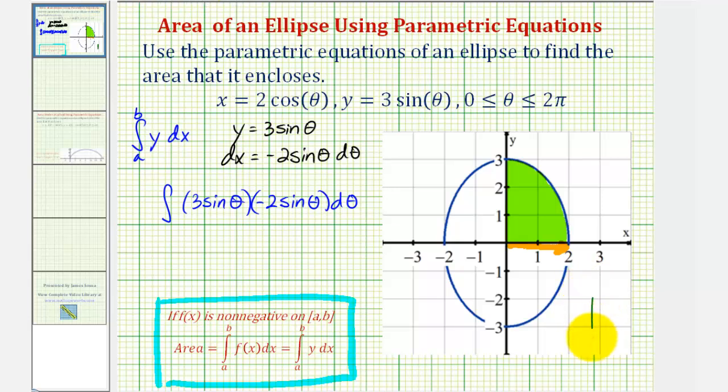So notice in this case, if we make a table of values for theta and x, when theta equals zero, notice how x would be equal to two cosine zero, which would be equal to two. And we don't want to start integrating at x equals two, we want to start integrating at x equals zero.